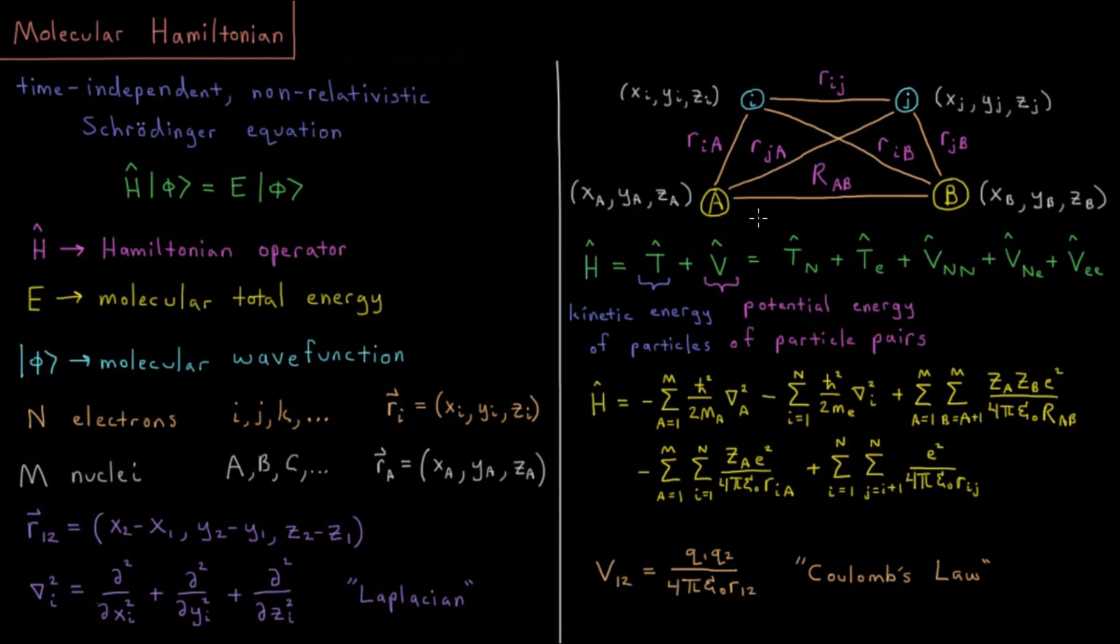If we think about all types of particles we might have, a diagram on the right shows two electrons and two nuclei: nucleus A, nucleus B, electron i, and electron j. We're interested in distances like rᵢⱼ between two electrons, rₐᵦ between two nuclei, and four instances of distance between an electron and a nucleus.